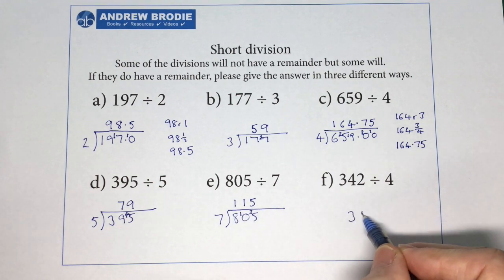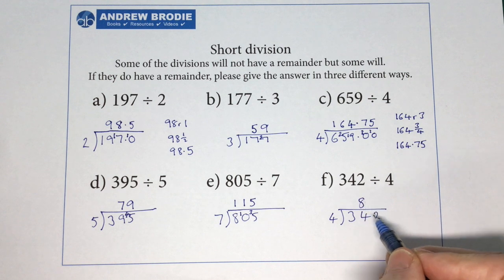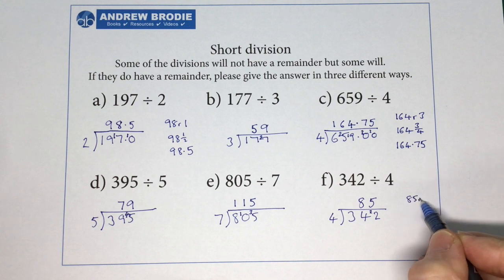And this one, 342 divided by 4. 4 into 3 won't go. 4 into 34 goes 8 times. 2 left over. 4 into 22 goes 5 times. So we've got 85, remainder 2.